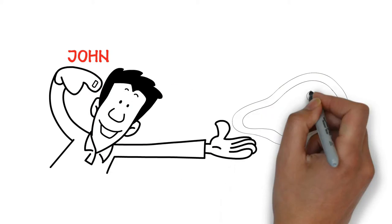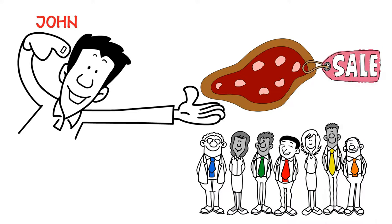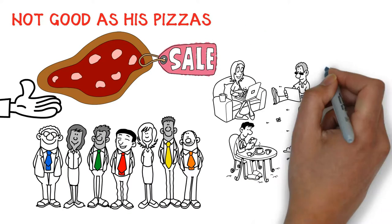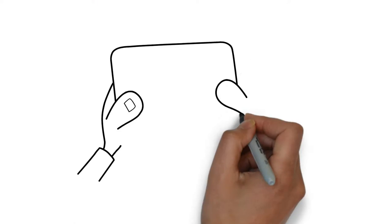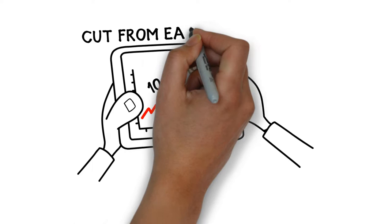John makes the best wood oven pizzas in town. He has loyal followers, but sales, well, not as good as his pizzas. He knows where his customers are going: online. Most online ordering companies take 10, 15, 16% cut from each order.